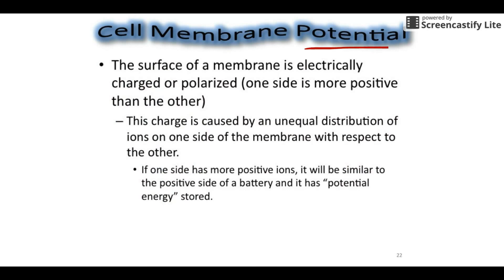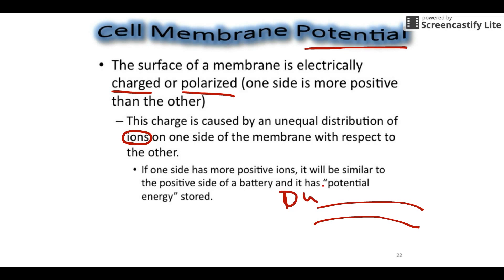We keep using the word "potential" and we need to define it. Potential refers to the fact that the membrane surface is electrically charged, or polarized — you need to know both those words. One side is more positive than the other. This isn't caused by electrons like in a battery; what we're talking about here is ions. At rest we typically see a lot more positive ions — like sodium, potassium, calcium — on the outside, and more negative ions on the inside. That means we have a positive side and a negative side, so the membrane is charged or polarized.